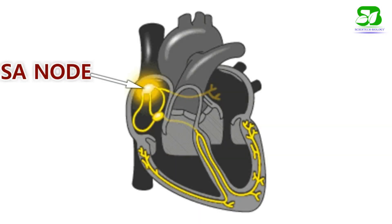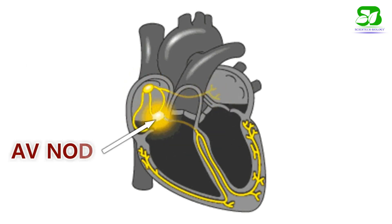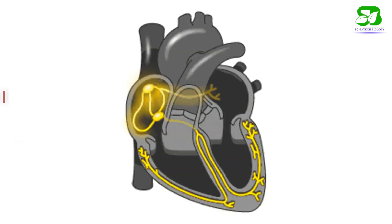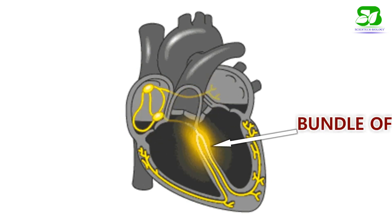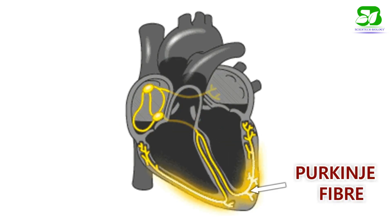This system consists of: the sinoatrial node or SA node, the atrioventricular node or AV node, the internodal pathway, the bundle of His and its branches, and Purkinje fibers.